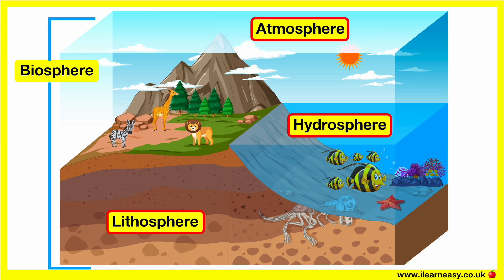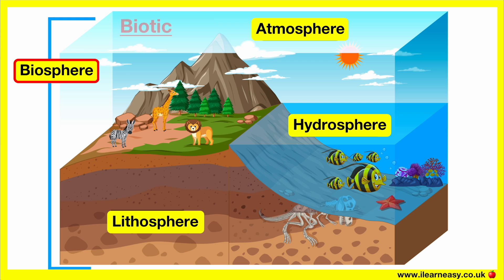The atmosphere, hydrosphere and lithosphere are abiotic, meaning they are all non-living things. The biosphere contains all biotic or living creatures and organisms, including plants, animals, bacteria, etc. All four spheres must work together to allow for the successful balance of life on Earth. Any threat to one sphere will have drastic effects on all the others.